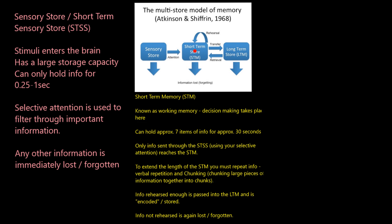Your short-term memory is the one we use pretty much all the time. It's known as the working memory — decision-making takes place here. Your short-term memory decides what to do in a situation based on the information that makes it through your short-term sensory store. Your short-term memory can hold approximately seven items of information — classically in the exam, five to nine pieces will get you the mark — and it can hold that information for about 30 seconds.